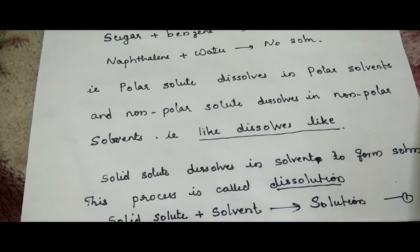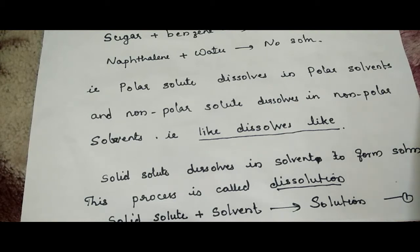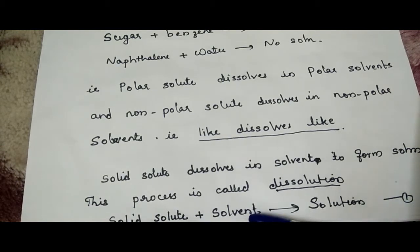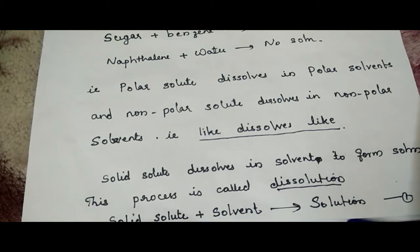Now we are going to learn about some terms related to solubility. First: dissolution. When a solid solute is added to the solvent, some solute dissolves and its concentration increases in the solution. This process is known as dissolution — that is, solid solute plus solvent gives a solution.